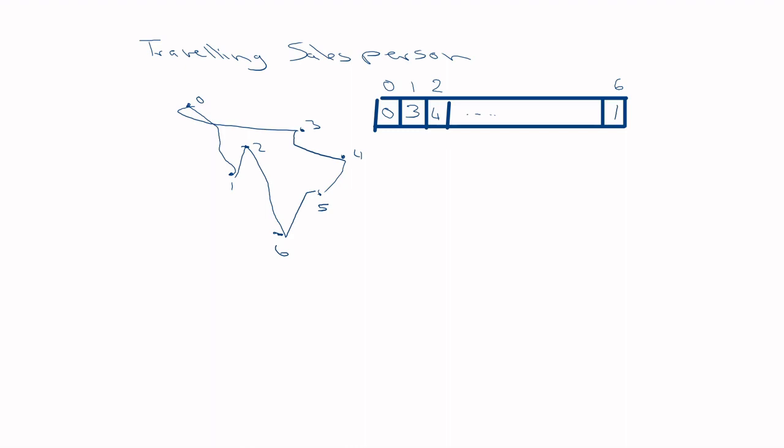The fitness function is pretty easy: calculate the total distance traveled. This is a minimization problem — you want the distance to be as small as possible. But that's not the only element to consider. For instance, with a simple four-city problem, you can observe additional properties to include in fitness.